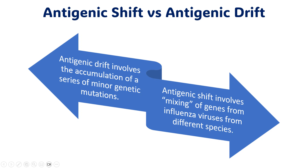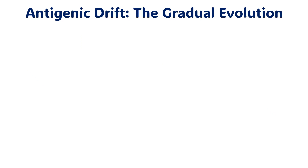Antigenic drift involves the accumulation of a series of minor genetic mutations. Small mutations occur in the genes and ultimately accumulate, bringing new antigenic components in the same virus. So we don't have a different kind of virus — it is the same virus where antigenic variation occurs. Whereas antigenic shift involves major changes, including mixing of genes from influenza viruses from different species, ultimately producing a new kind of virus.